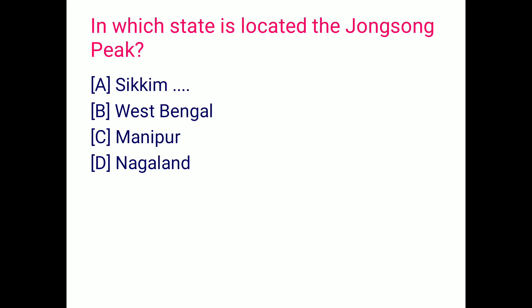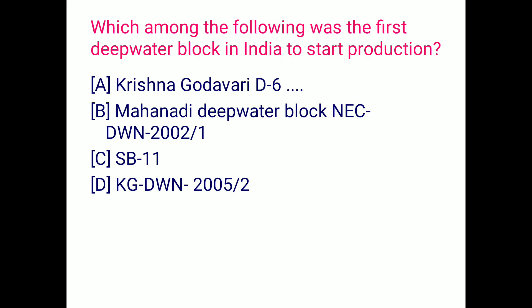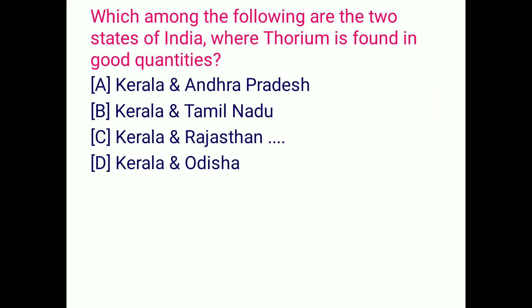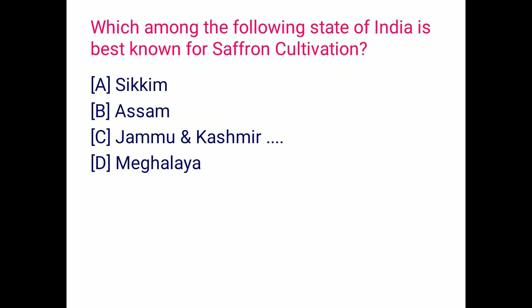Johnson Peak is located in Sikkim, option B. Next question: Which among the following was the first deepwater block in India to start production? That is Krishna Godavari D6. Next question: Which two states of India is thorium found in good quantities? That is Kerala and Rajasthan.